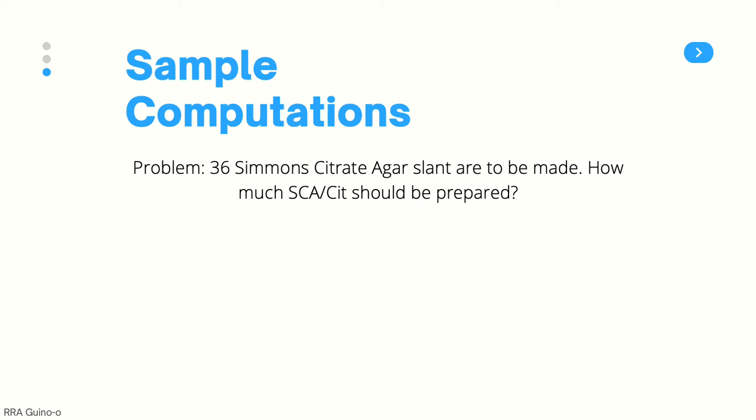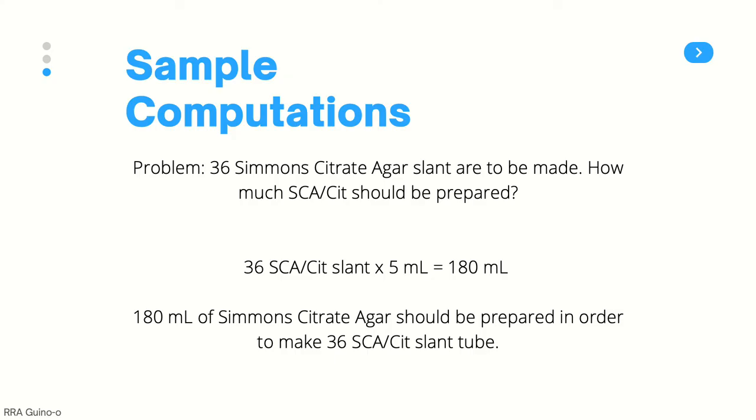Here we have one final problem: we need 36 Simmons citrate agar slants, another very common biochemical test in the laboratory. How much media should be prepared? The correct answer is 180 ml. For the slant, we need at least 3 to 5 ml of media per tube. Since we need 36 Simmons citrate agar slants, we simply multiply 36 by 5 ml and get 180 ml of Simmons citrate agar.